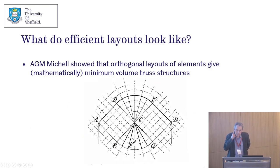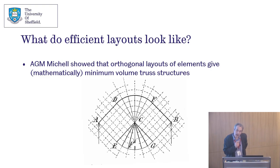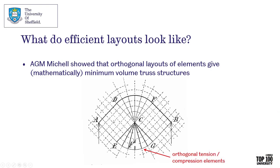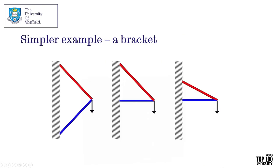What our research project shows is that changing the layout of members in addition to the size is likely to give rise to even bigger savings. Going back to trusses — what does an efficient truss layout look like? There's a really nice paper from 1904 by an Australian engineer called Mitchell, who showed that having an arrangement of tension and compression members that were arranged orthogonally gives rise to a minimum-volume structure. In a simple example with two supports A and B and a central load C, we get an arch in compression above and a tensile member below, arranged orthogonally.